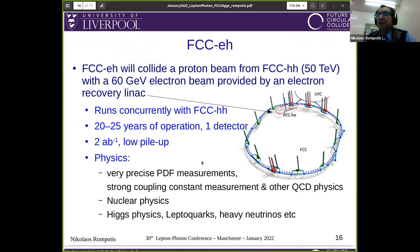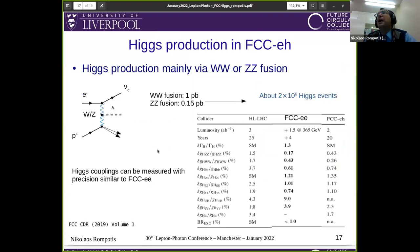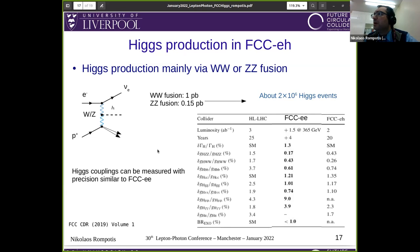One detector is assumed, with two inverse attobarns most probably, and very low pileup data. You can do very precise PDF measurements and other physics, but also Higgs physics and some beyond-standard-model physics. With respect to Higgs production in FCC-eh, it proceeds via WW or ZZ fusion. Over 20 or 25 years of operation, you expect to get similar statistics to FCC-ee, and in general similar precision in the couplings. You cannot do the recoil method there, so you don't have an absolute measurement of the couplings, but you still have very good precision.